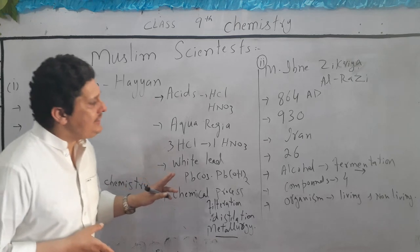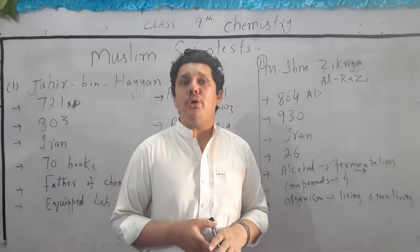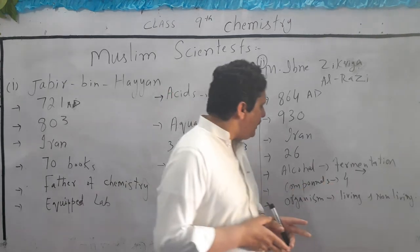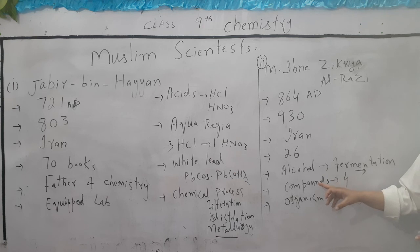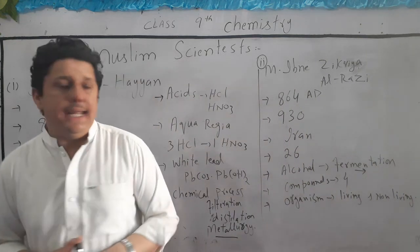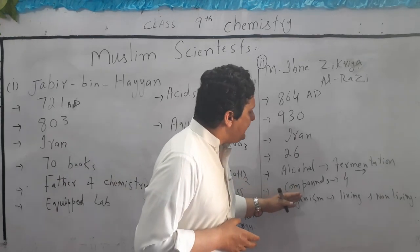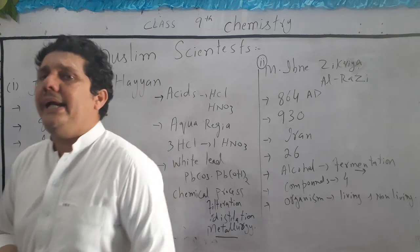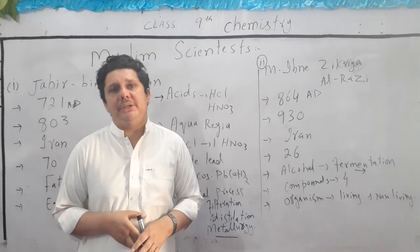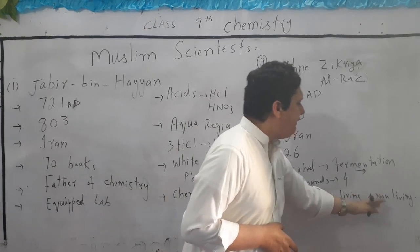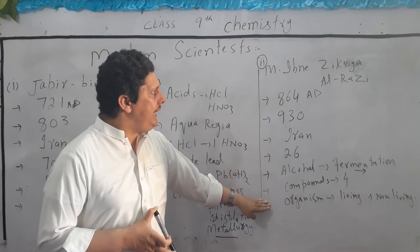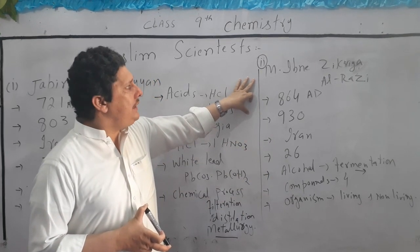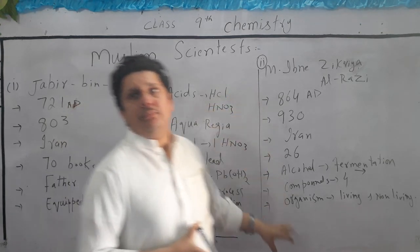He is the first scientist who classified or divided compounds into four types. He also divided organisms into living and non-living organisms. So this is about the second Muslim scientist, Muhammad ibn Zakariya al-Razi.